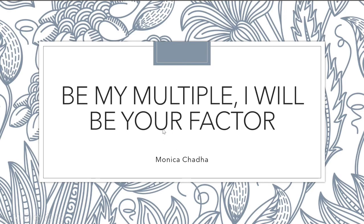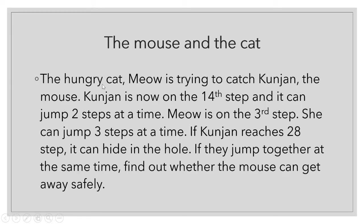The name of our chapter is 'Be My Multiple, I Will Be Your Factor.' We are going to see a very nice chasing game of a cat and a mouse. The hungry cat Meow is trying to catch Kunjan the mouse. Kunjan is now on the 14th step and can jump two steps at a time. Meow is on the 3rd step and can jump three steps at a time. If Kunjan reaches the 28th step, it can hide in the hole. Find out whether the mouse can get away safely or not.